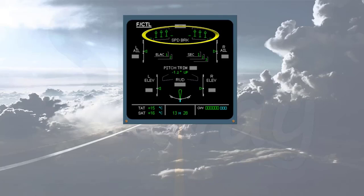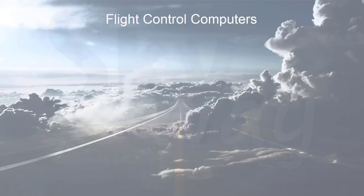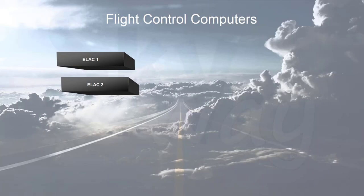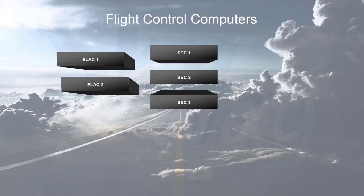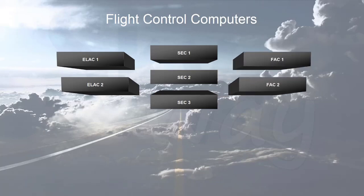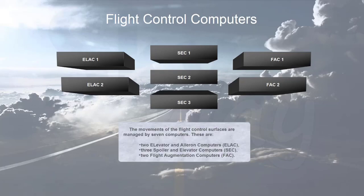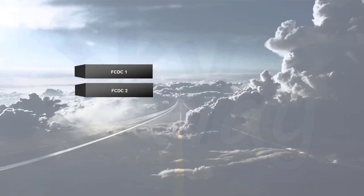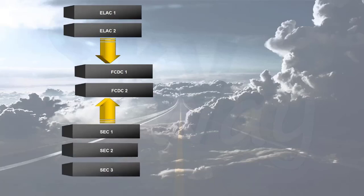Now we will look at the flight control computers. The movements of the flight control surfaces are managed by seven computers: two elevator and aileron computers (ELAC), three spoiler and elevator computers (SEC), and two flight augmentation computers (FAC). In addition, two flight control data concentrator computers (FCDC) are used to acquire data from the ELAC and SEC, then send it to the EIS.